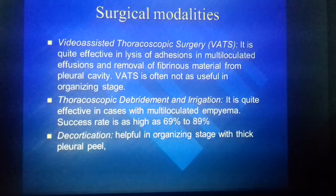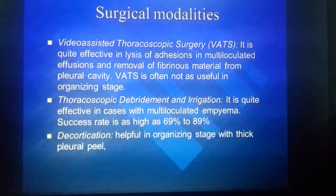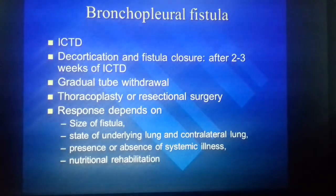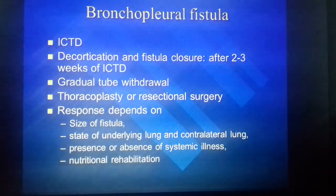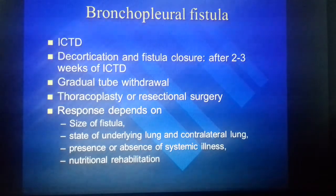Surgical modalities include VATS, which is quite effective in lysis of adhesions and multi-loculated effusions and removal of fibrinous material from the pleural cavity, though VATS is often not useful in the organizing stage. Thoracoscopic debridement and irrigation is quite useful in multi-loculated empyema with a success rate of 69 to 89%. Decortication is helpful in the organizing stage with thick pleural peel. Bronchopleural fistula requires intercostal drainage, and closure can be done after 2 to 3 weeks. Thoracoplasty and resectional surgery can also be done; response depends on size of fistula, state of underlying lung, and systemic illness.